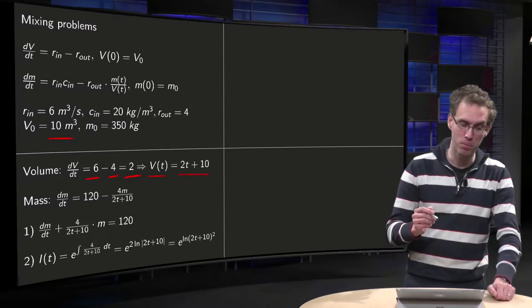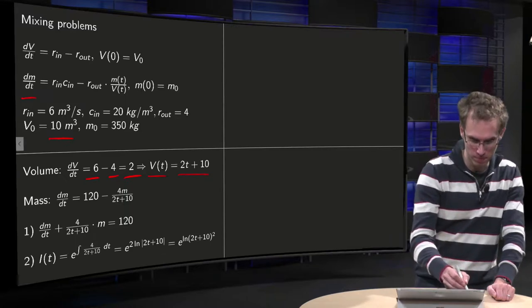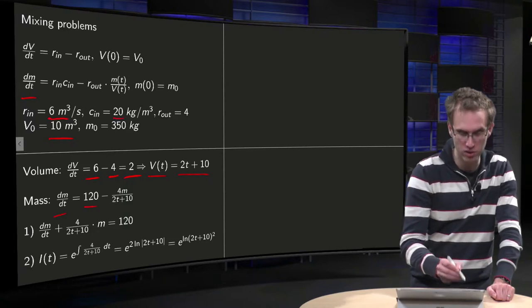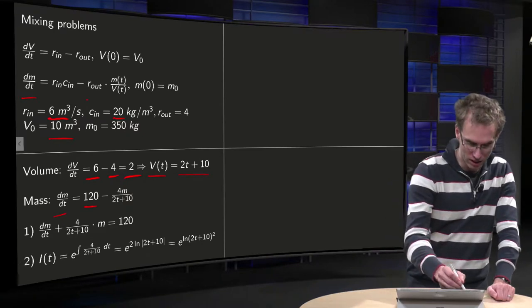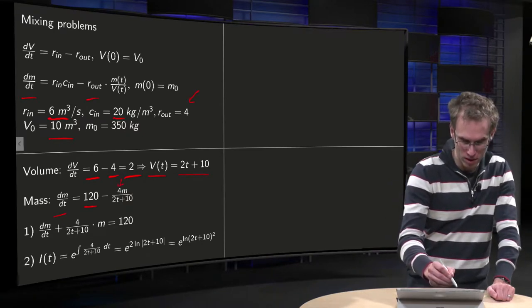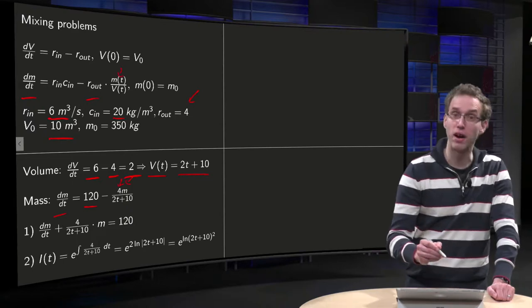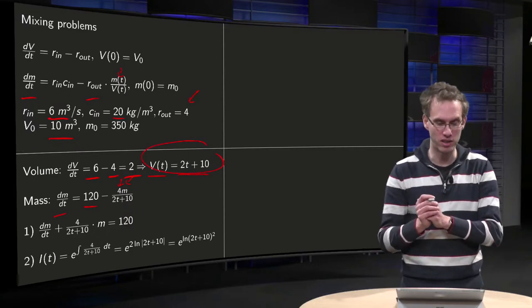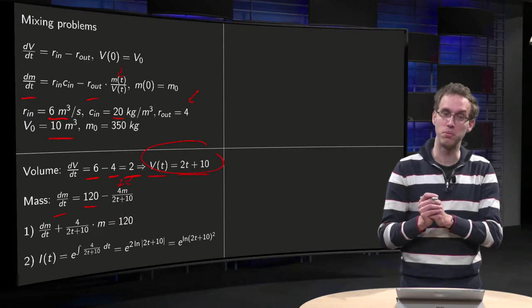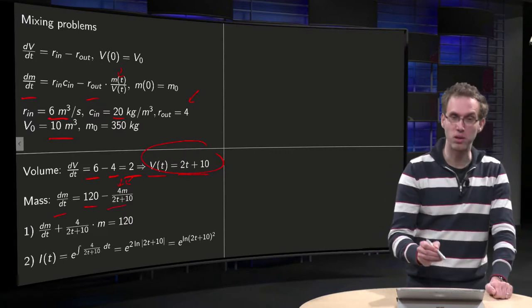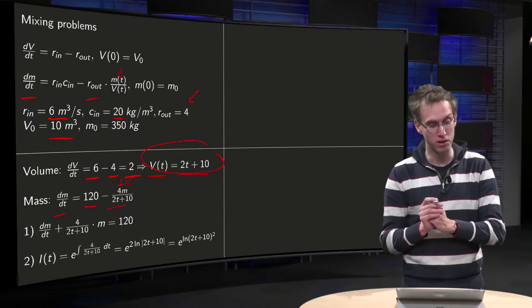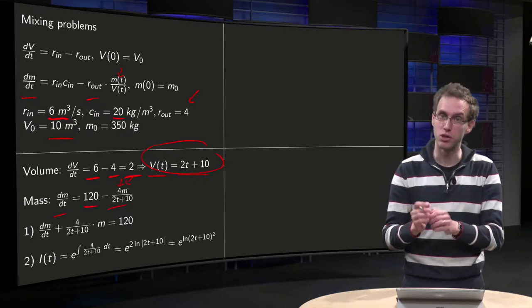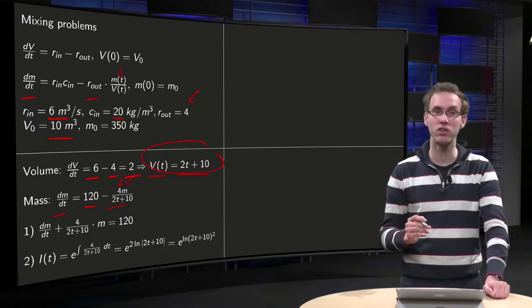Mass balance is slightly more complicated. dm/dt equals rate in times c_in. Rate of 6 times c_in of 20 equals 120. That part is fine of course. Minus rate out of 4, so we get a minus 4 times m. We get our m divided by V, and we just derived our V as 2t plus 10. So dm/dt equals 120 minus 4m over (2t + 10). We can bring this term over to the left hand side, and then we observe that we have a linear differential equation for m. dm/dt plus some function of t times m equals some function of t on the right hand side, 120.